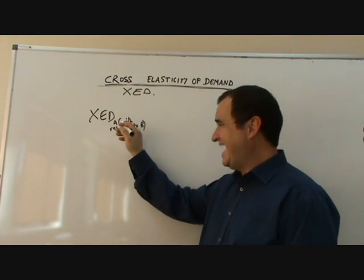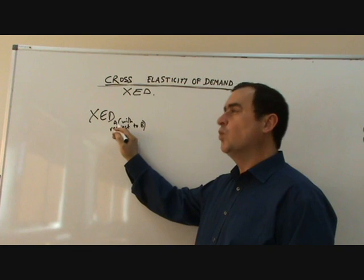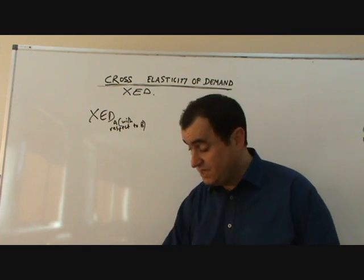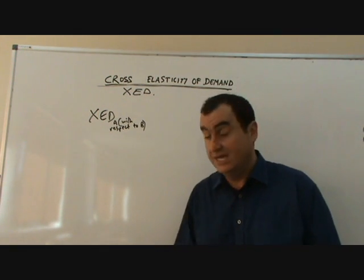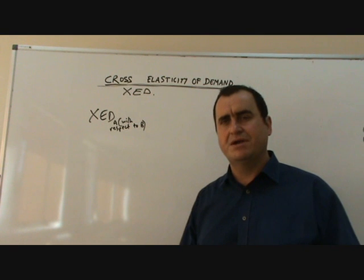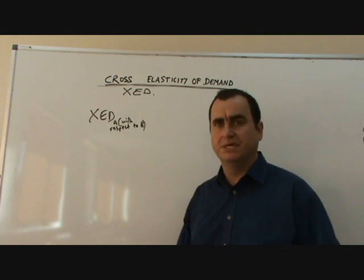A, how does its demand change when B changes price? Nothing else. A's price is not changing. Income is not changing. Ceteris paribus, we are just looking at the change in the price of B.